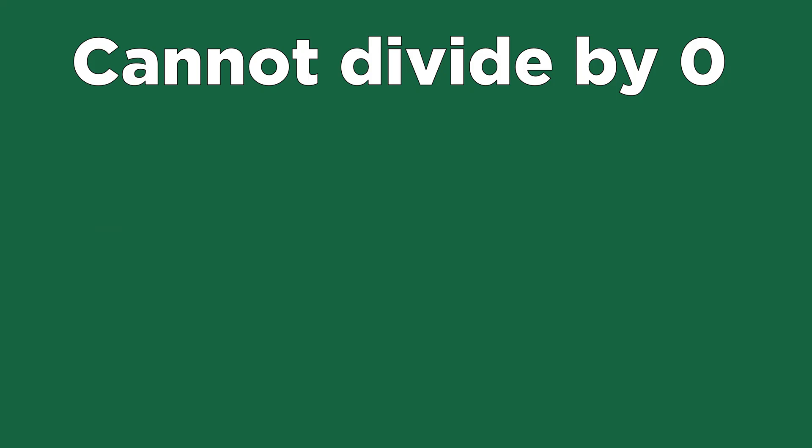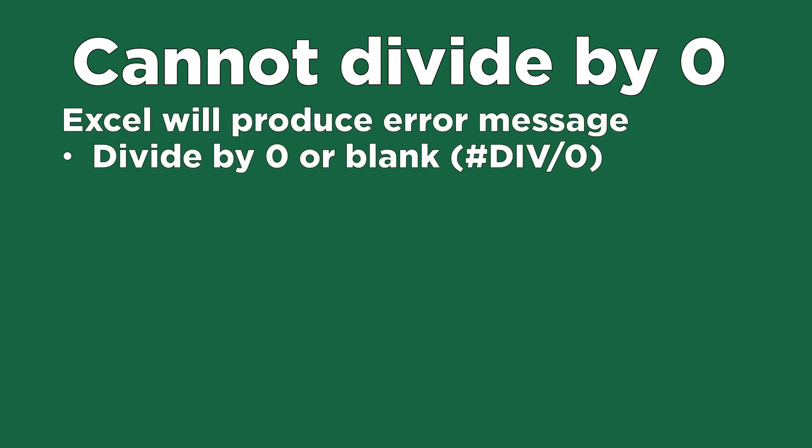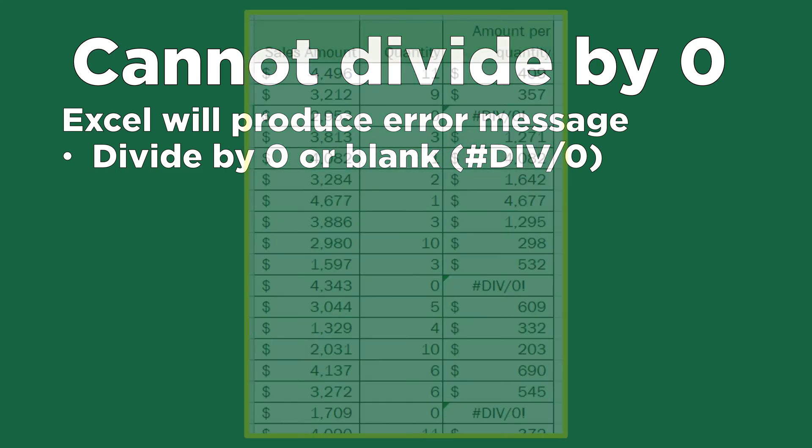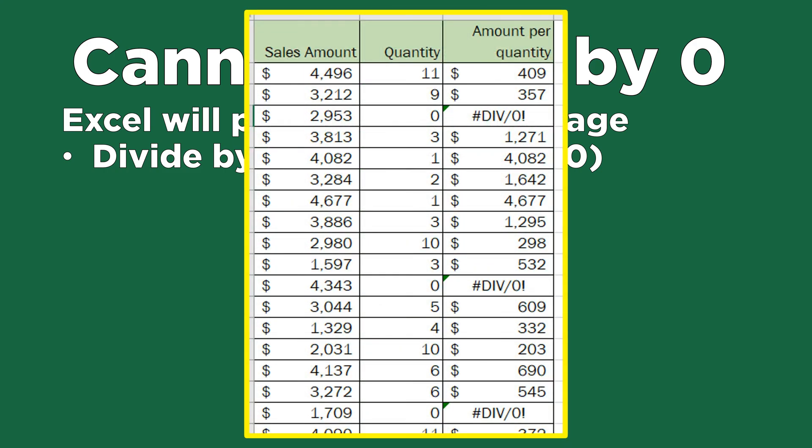You may recall from your math classes that you can never divide a number by zero, and Excel is no different. When you attempt to do this, Excel will produce an error. While this is 100% mathematically correct, it can look really bad on a report. The divide by zero error message in the third column is accurate, but you would never want to hand a report like this to your boss.